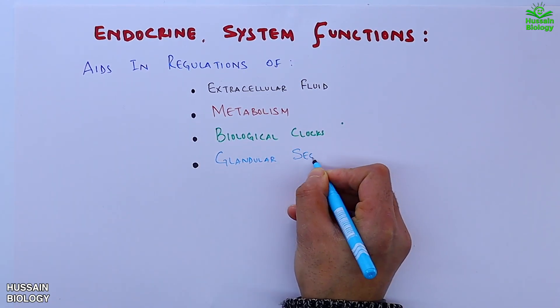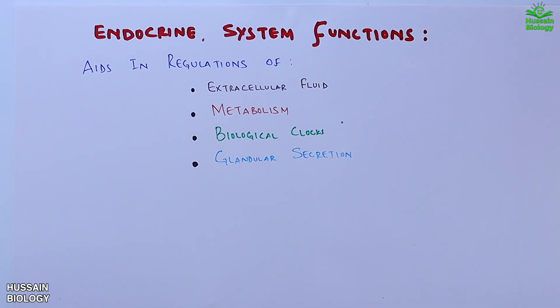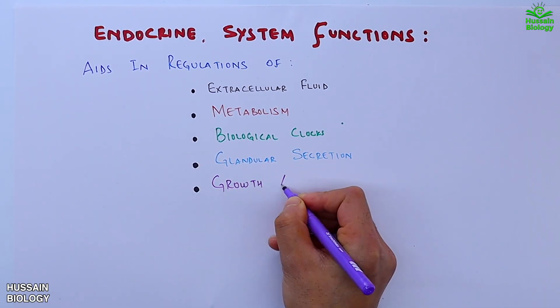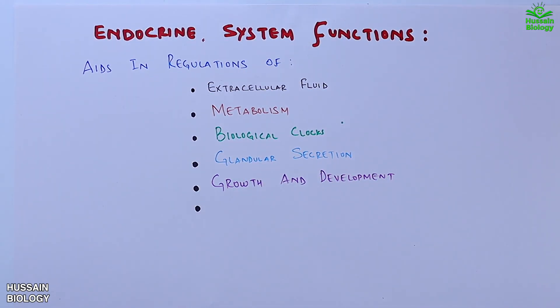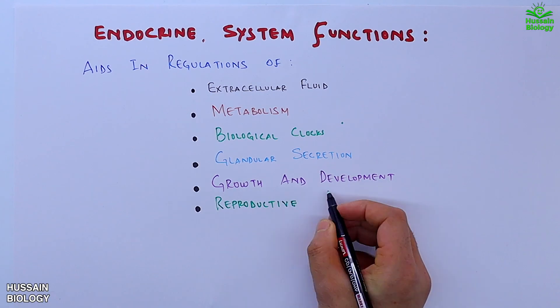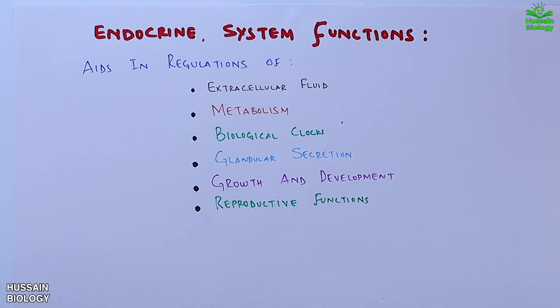Fourth is glandular secretion. Fifth is growth and development. Sixth is reproductive function, and seventh is some immune functions and much more.